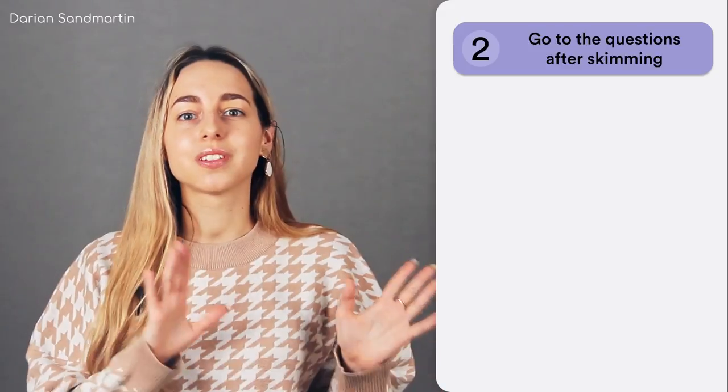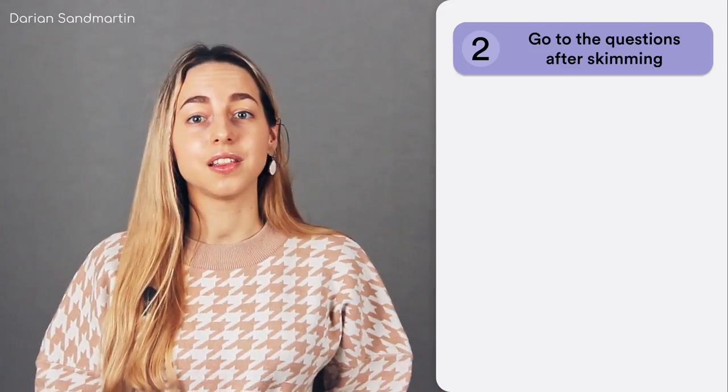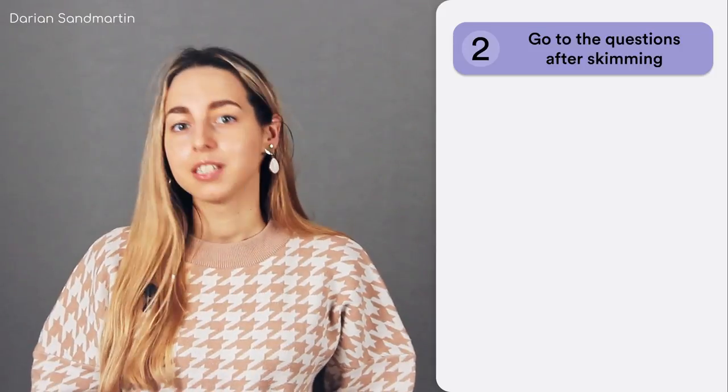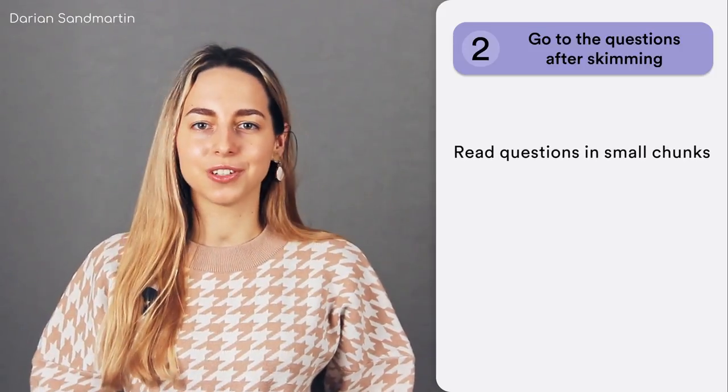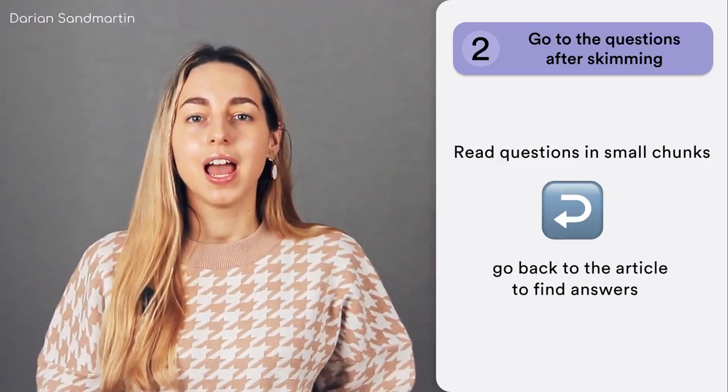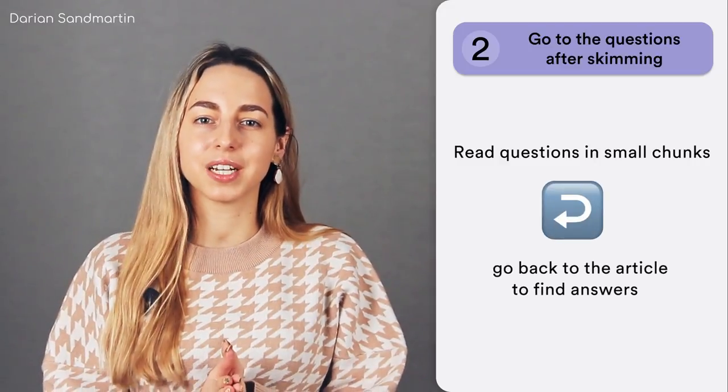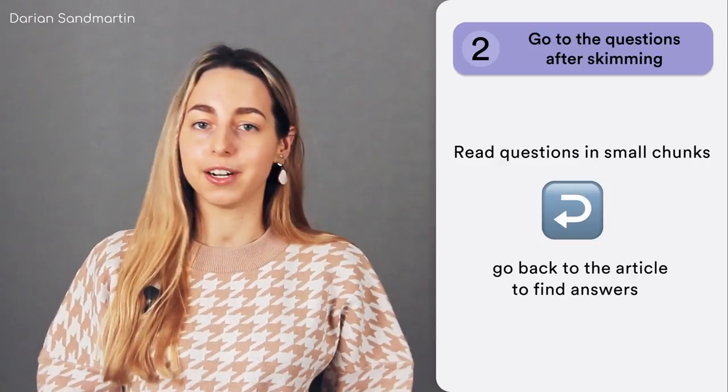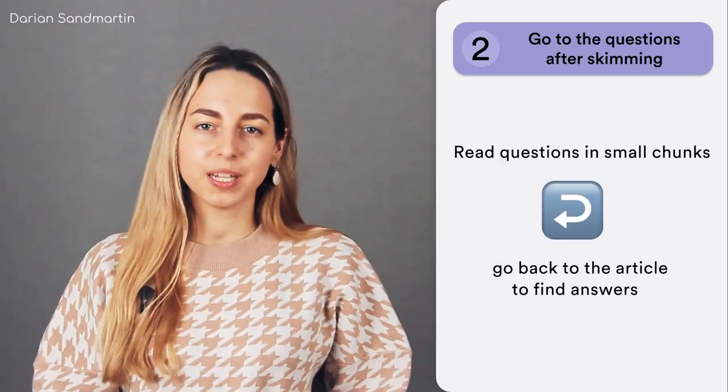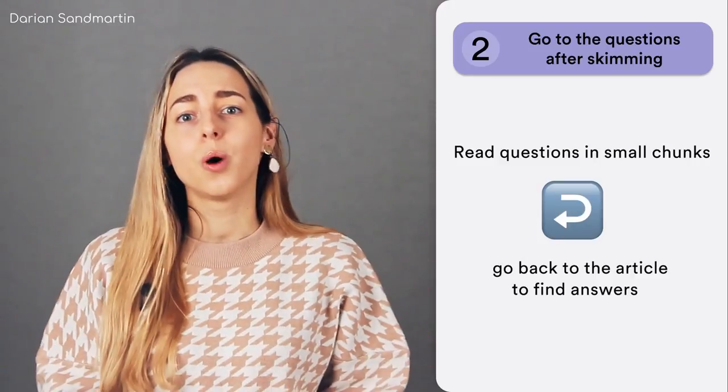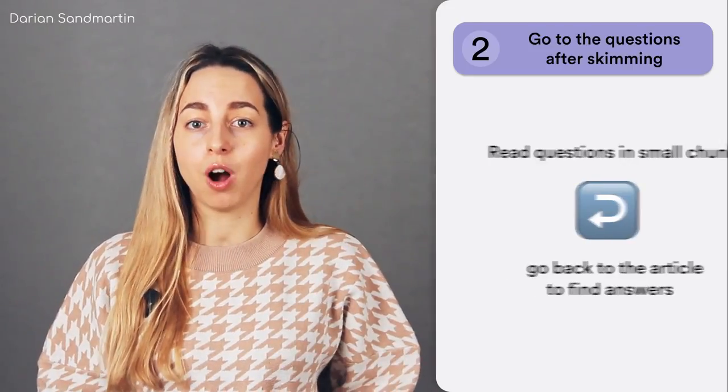Tip number two. Go to the questions after skimming. Answers in the text are usually located in the same order as questions are so it's a good idea to read questions in small chunks and then go back to the article to find answers. At this point skimming has helped us to understand what the article is about and what ideas its paragraphs convey. So it's much simpler to work with questions now because we are more or less at ease with the text's outline and generally understand where to look for answers.